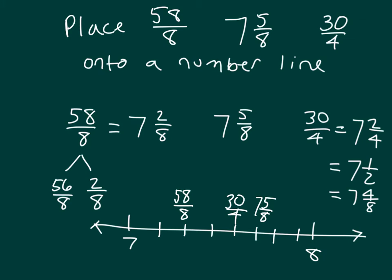So the order goes 58 eighths was less than 30 fourths, was less than 7 and 5 eighths, if I was to compare them.